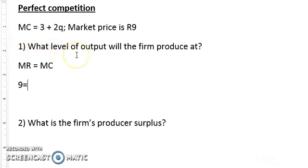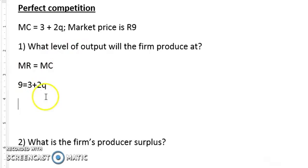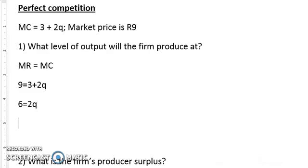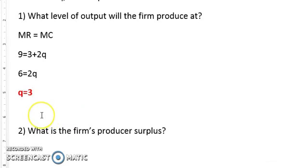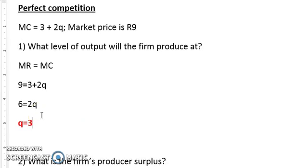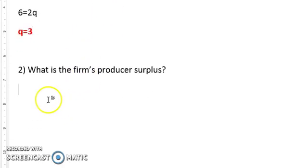So MR equals MC means nine equals 3 plus 2Q. Solving for Q: take 3 to the other side, giving 6 equals 2Q, so Q equals 3. So the firm will produce at a quantity of three, and the price is nine.